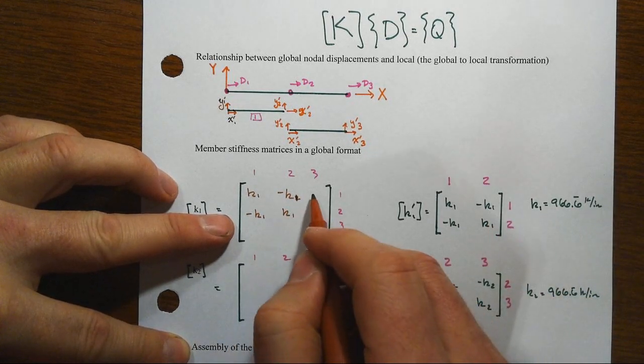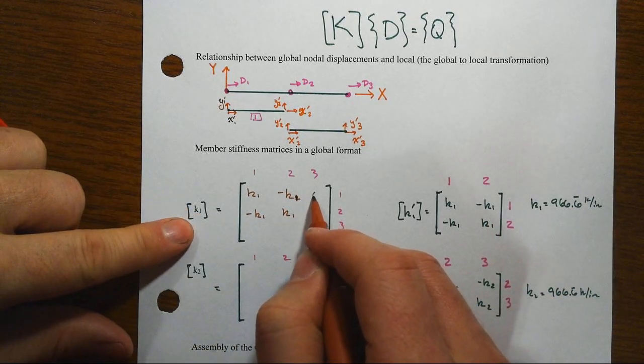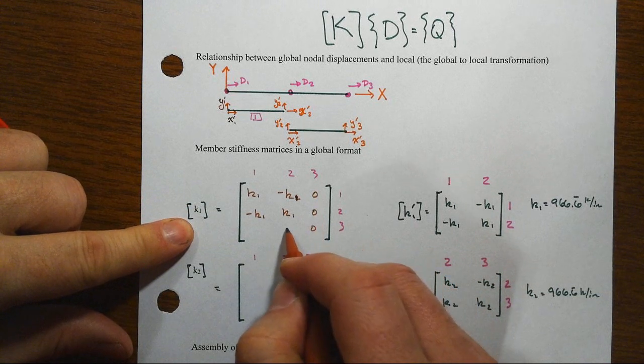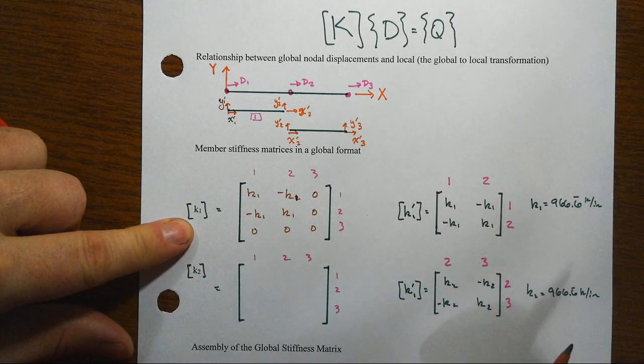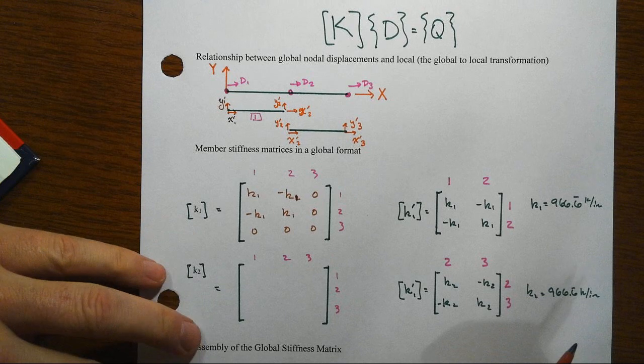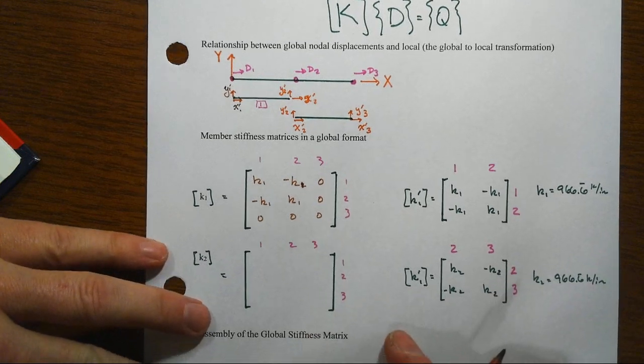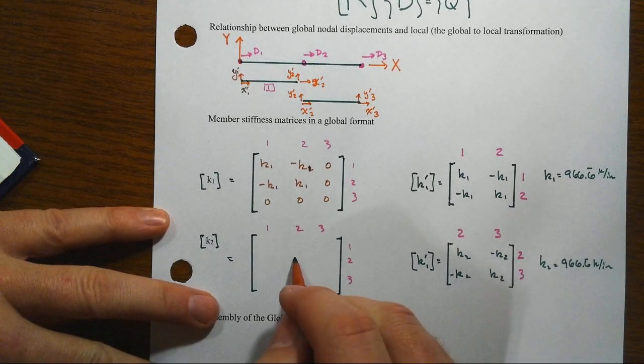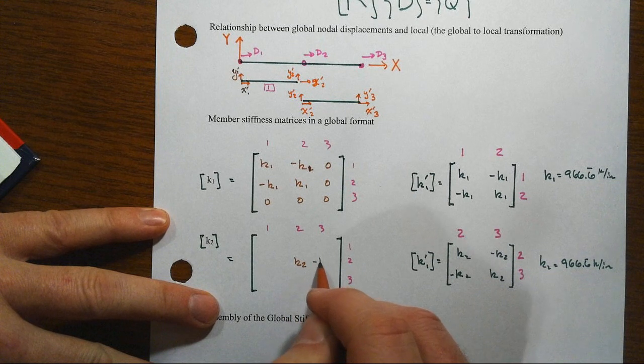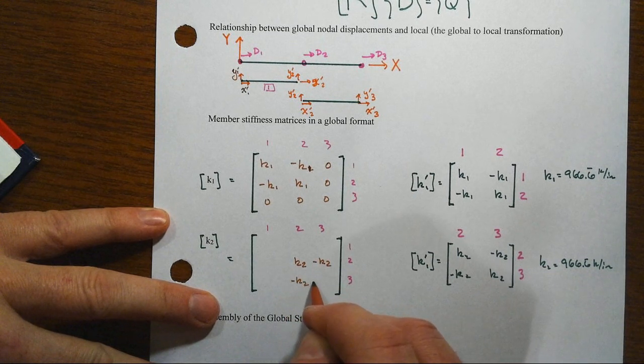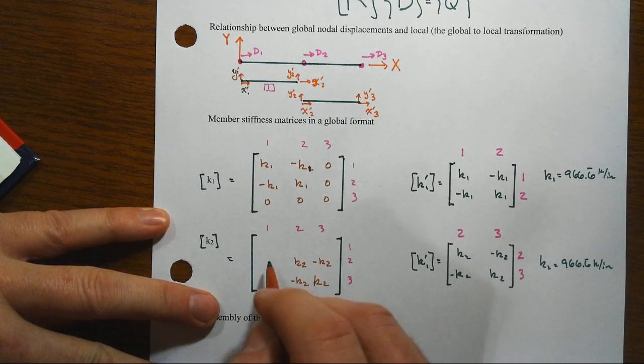And member one is not attached to the degree of freedom 3, so you end up with zeros over there. Likewise, when you pull the other one around, you'll have K2 showing up directly. And then that member is not attached to the degree of freedom 1, so we had those zeros.